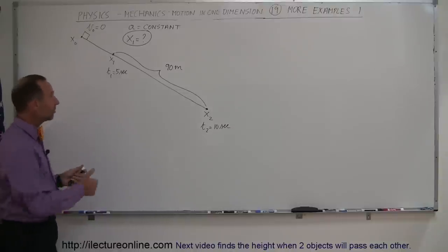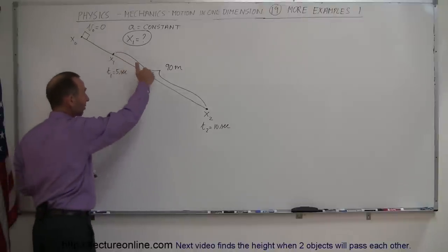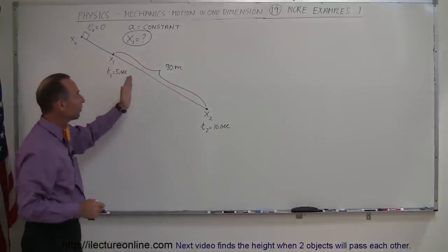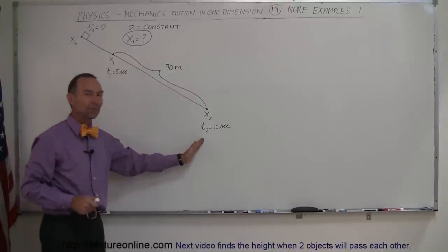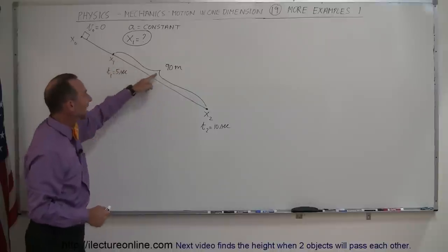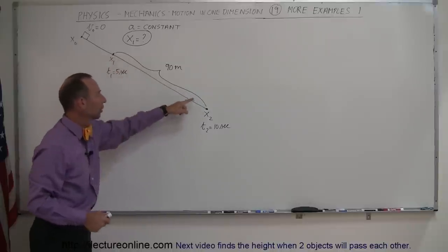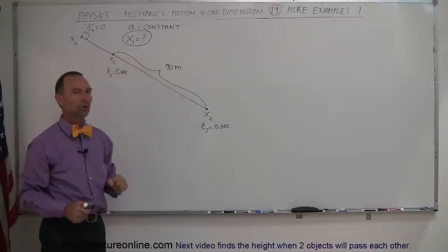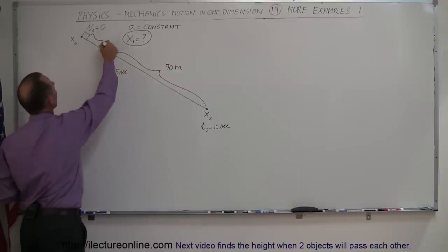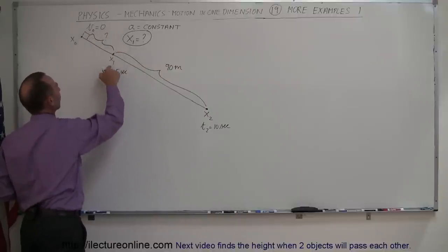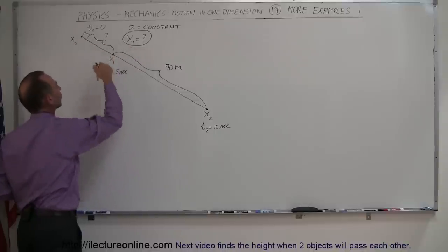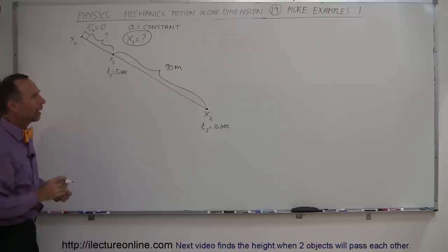The next five seconds it continues to slide, it continues to accelerate, so it covers more and more distance in the same amount of time. So when another five seconds elapses — total time is ten seconds — it will have covered a distance of 90 meters from that first point to the second. The question now is, how far is this distance? In other words, how far is x1 from the initial point?